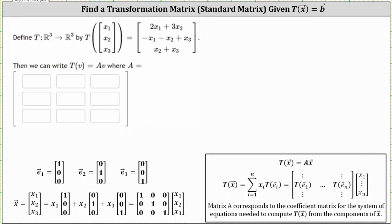We have a transformation from R3 to R3 given by T of vector x equals the given vector shown here on the right, where x1 is equal to 2x1 plus 3x2, x2 is equal to negative x1 minus x2 plus x3, and x3 is equal to x2 plus x3.